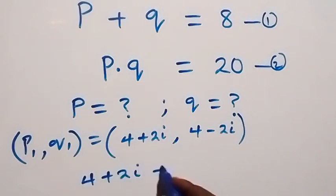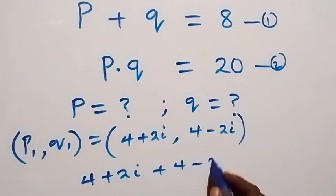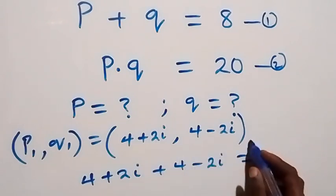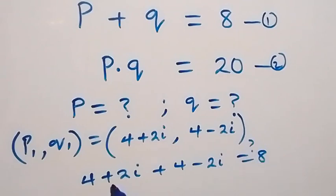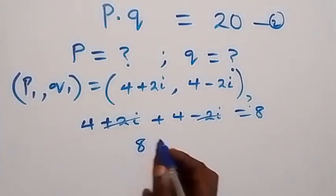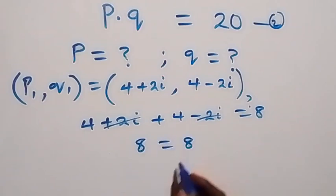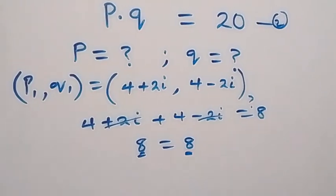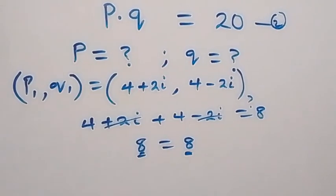In equation 1, we have (4 + 2i) + (4 − 2i) equals 8. The 2i and minus 2i cancel out, leaving 4 plus 4, which equals 8. Since the left-hand side equals the right-hand side, the solution satisfies equation 1.